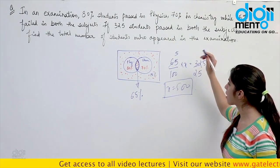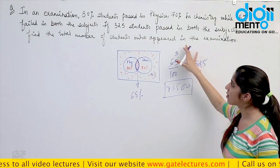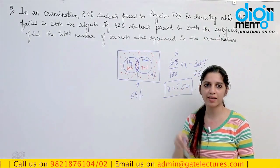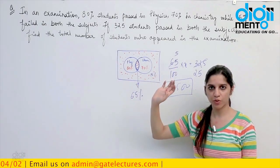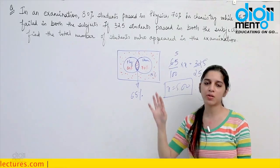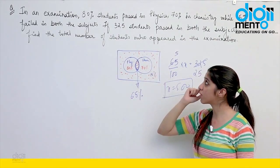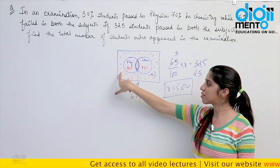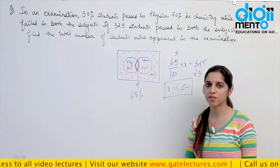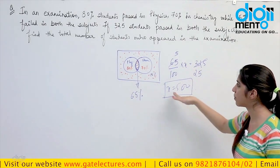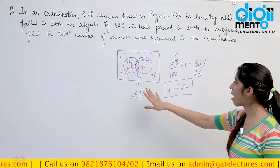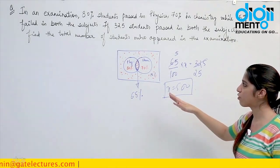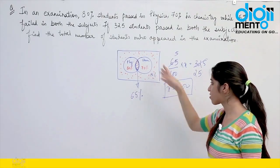If you try to solve this by forming algebraic equations considering total students as X, finding 80% of X and 70% of X, it becomes very confusing and time-consuming. The best way to solve questions where some students pass both, pass none, or pass one subject is always to use set theory. This took only half a minute. Always approach these type of percentage questions with set theory. The answer is 500 total students.